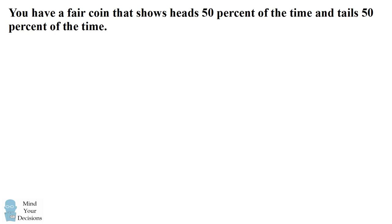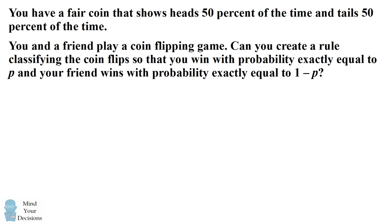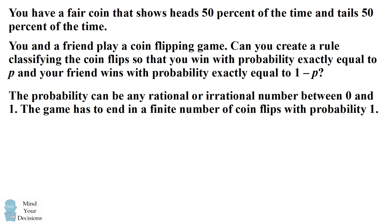Hey, this is Presh Talakkar. You have a fair coin that shows heads 50% of the time and tails 50% of the time. You and a friend play a coin flipping game. Can you create a rule classifying the coin flips so that you win with probability exactly equal to P and your friend wins with probability exactly equal to 1-P? The probability can be any rational or irrational number between 0 and 1. The game has to end in a finite number of coin flips with probability 1.